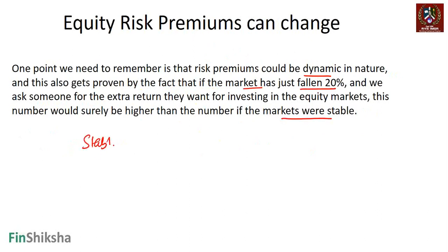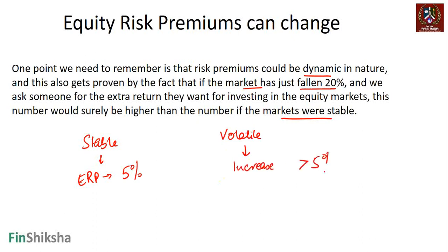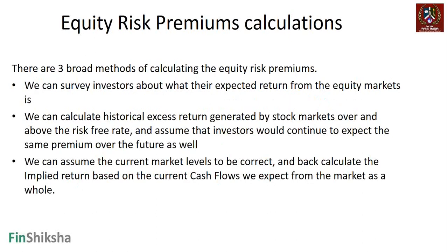If in stable markets someone says they want a 5% extra return for investing in equities, in volatile markets this number will almost always be greater than 5%. Risk premiums could change and are reflective of current market conditions — whether they are stable or volatile. In extremely volatile market conditions, it is logical to expect that risk premiums would go up.